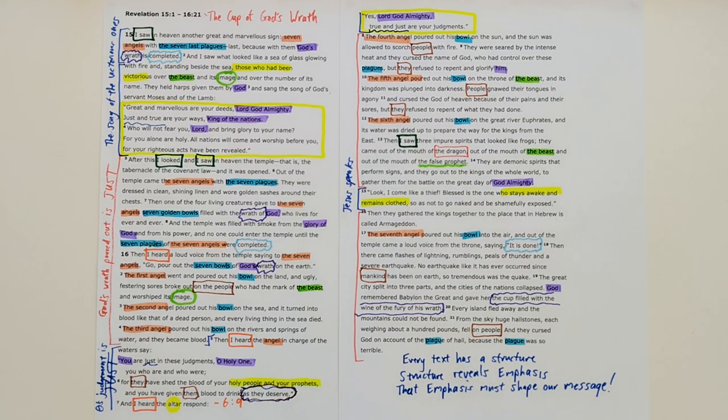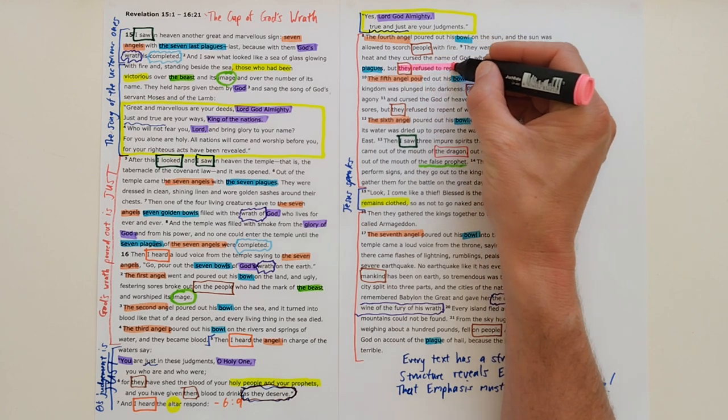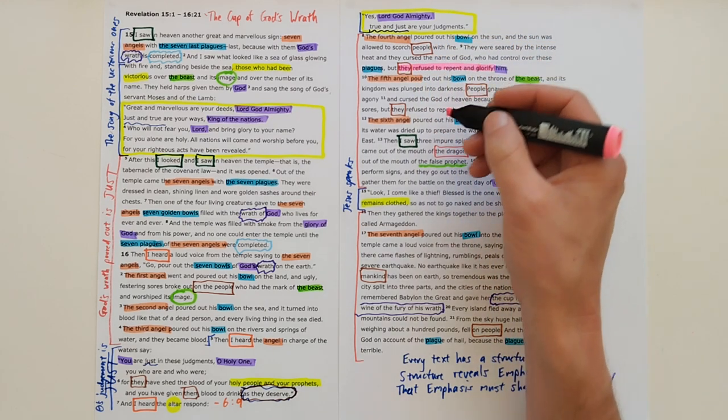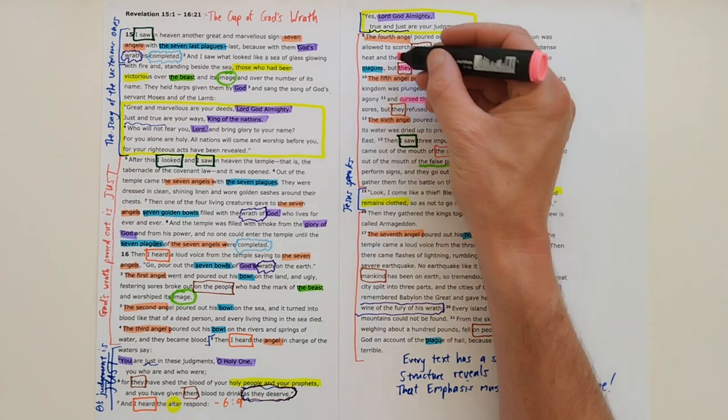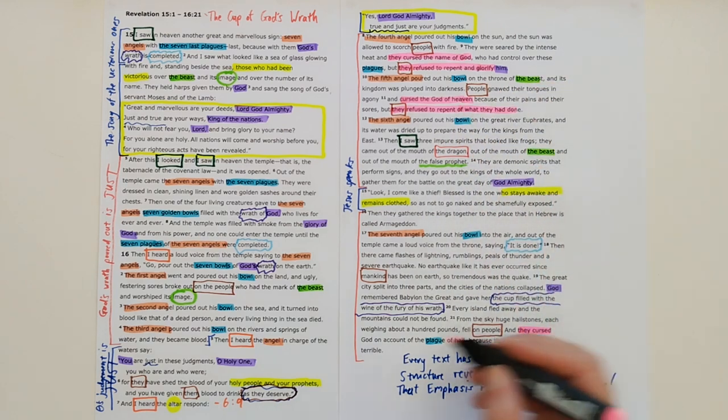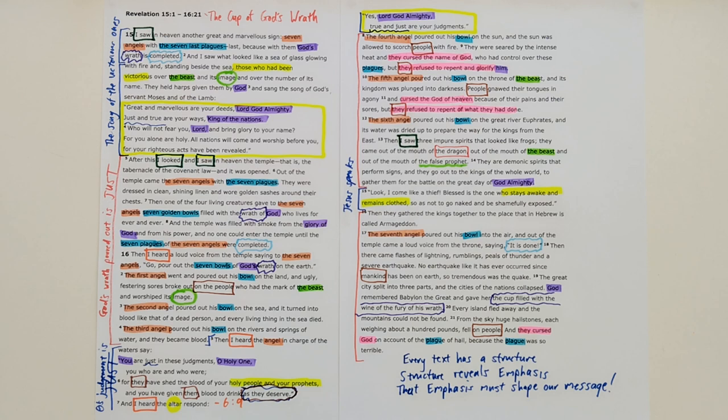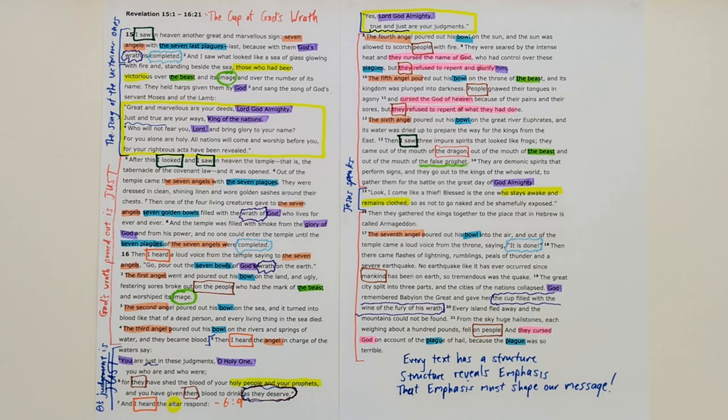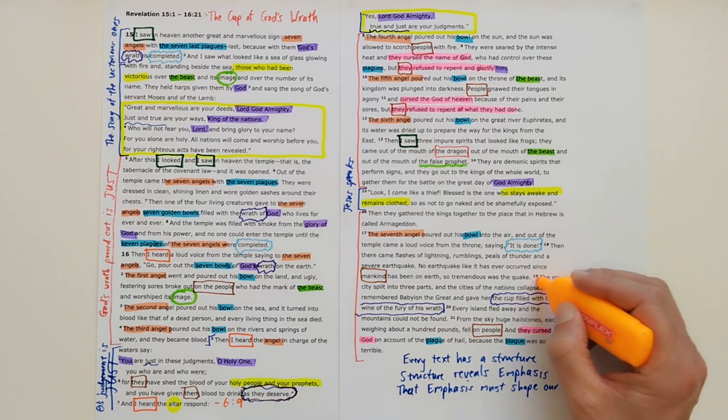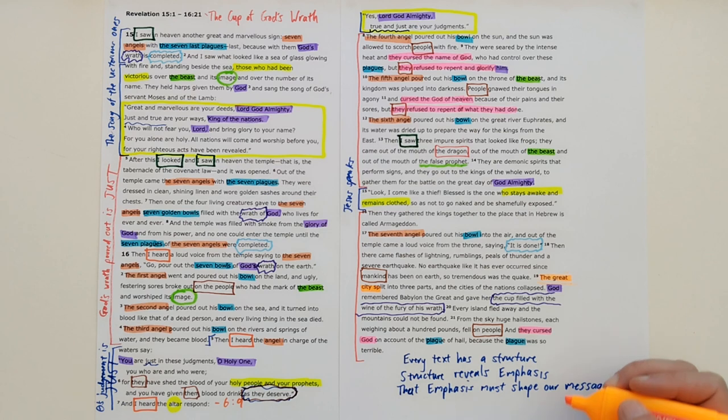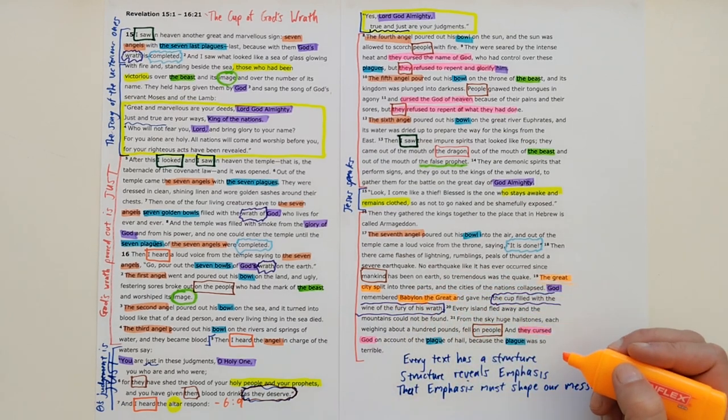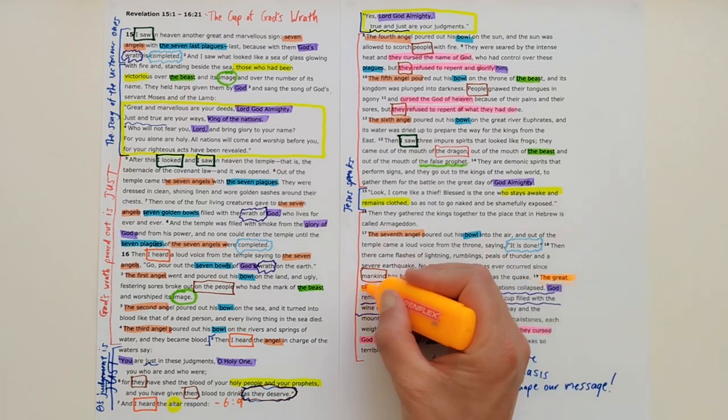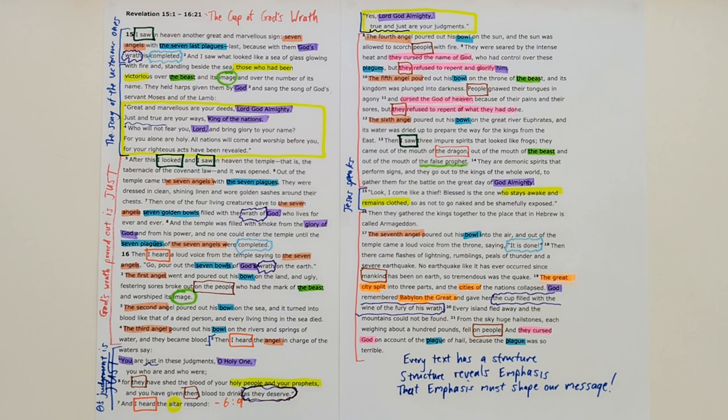So we see sinful humanity being judged here. And one of the devastating things that we see is that in their judgments they refuse to repent and glorify God. And we see they curse the God of heaven. And the whole section ends right at the end of the judgment with them cursing God. Now we heard in the previous section the angel crying 'Fallen, fallen is Babylon the great.' And here we see the great city split in three parts, and God remembered Babylon the great.